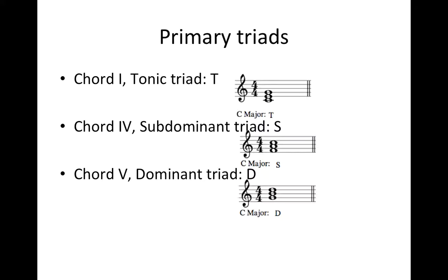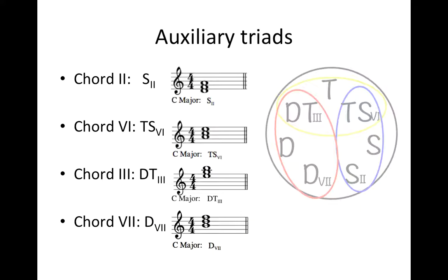Primary chords are chords 1, 4, and 5. Chord 1 is the tonic chord, we use T to represent it; chord 4 is subdominant, so we use S; and chord 5 is dominant, we use D. Other chords in the scale — for example, chord 2 is represented by S, because it shares two common notes with the subdominant chord, so we say it has the function of subdominant.